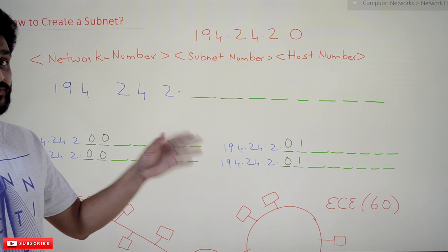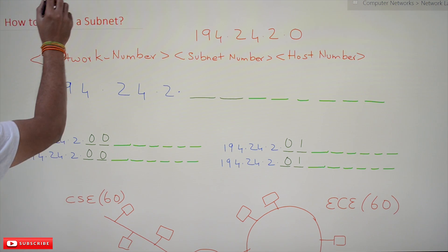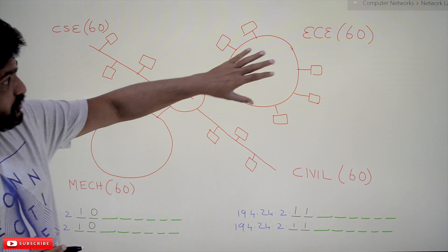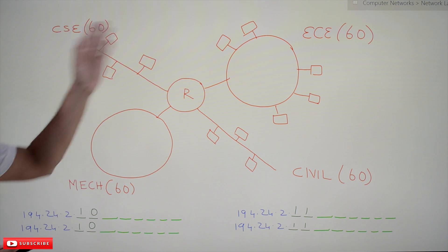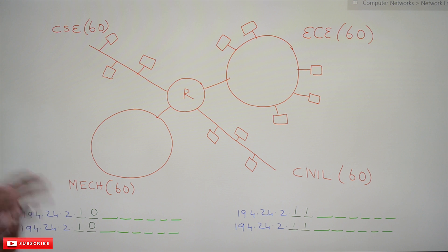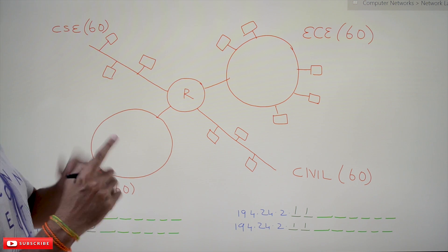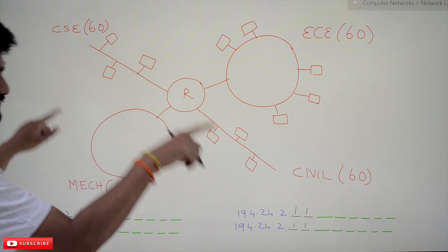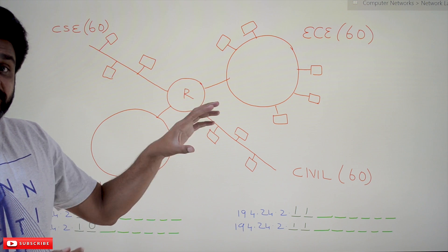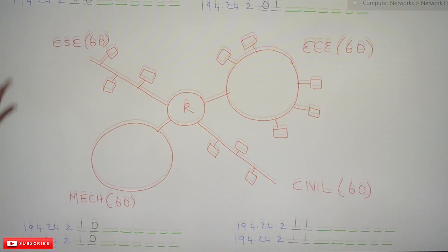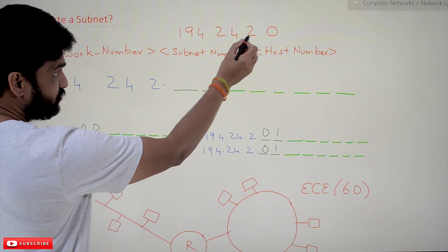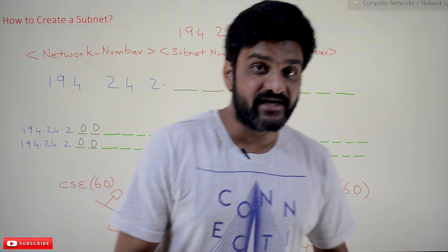We will use the example from our previous video. We are going to create a university subnet for four departments, each department having 60 systems: CSE, ECE, Mechanical, and Civil. As we have 60 systems in each department, the total is around 256 systems. For this we need a Class C address. The Class C address we are going to consider is 194.24.2.0.